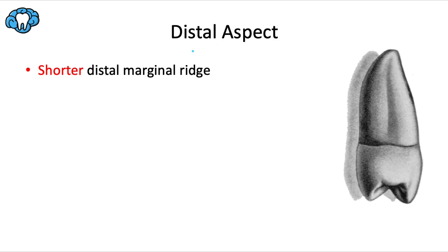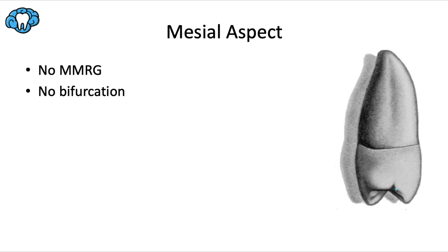If you've been watching from the start of this series, you've already memorized the universal traits of the distal aspect — that flatter cervical line and the distal root flute being deeper than on the mesial surface. Now I'm adding something new: as you go distally, teeth get shorter and shorter, and this even happens within the same tooth. The distal part of the crown is shorter than the mesial part, meaning the distal marginal ridge is shorter than the mesial marginal ridge. So you can actually see more of the occlusal surface from the distal view.